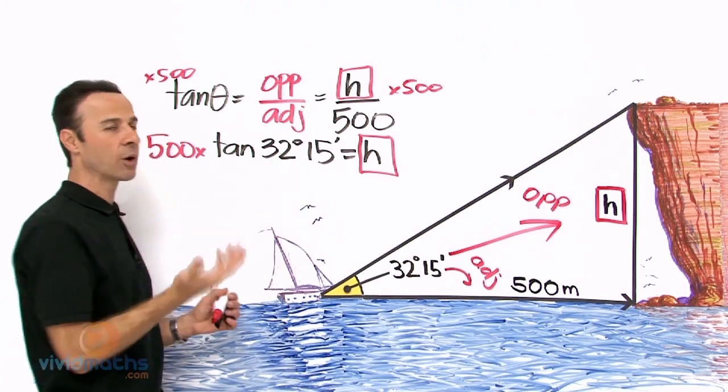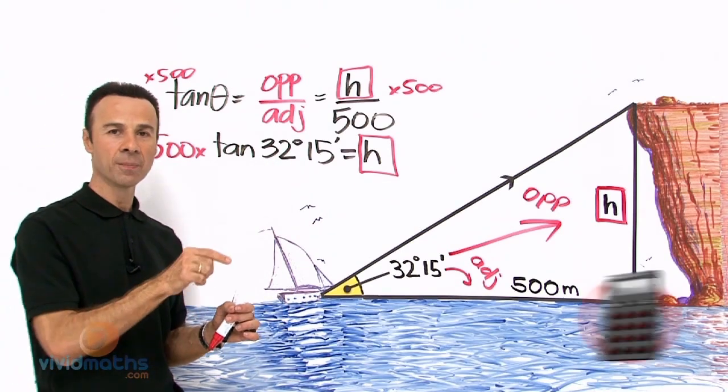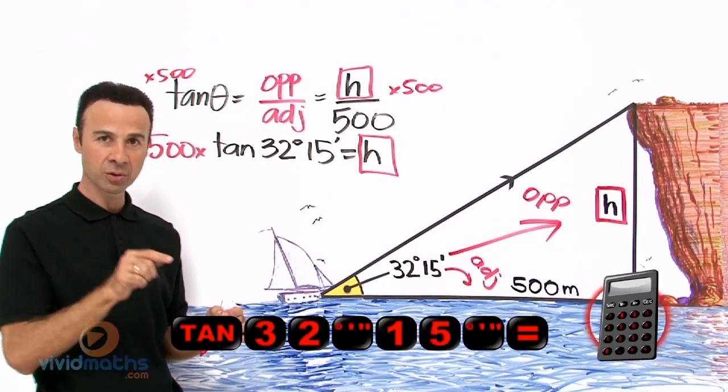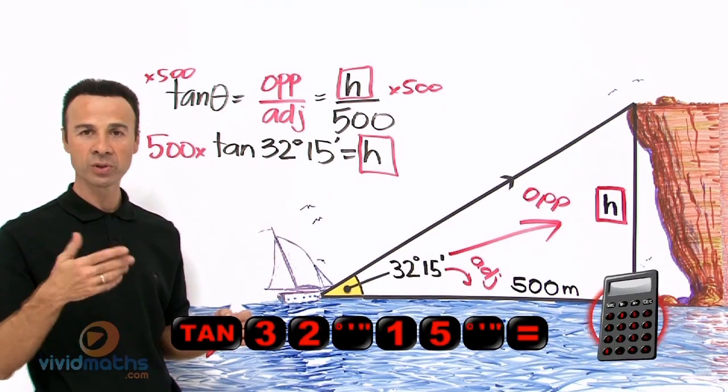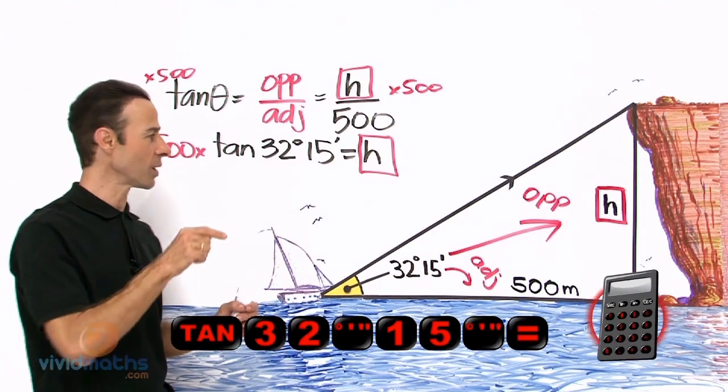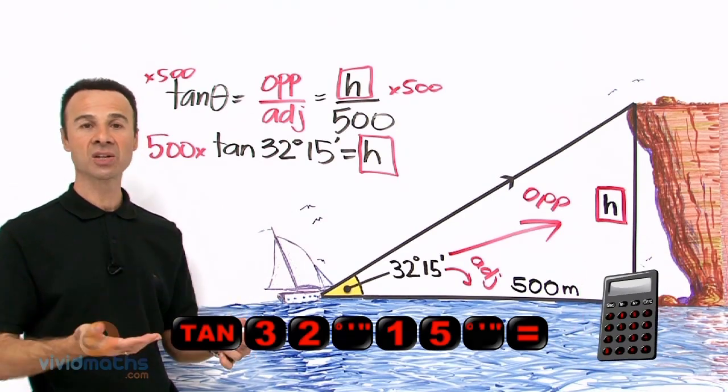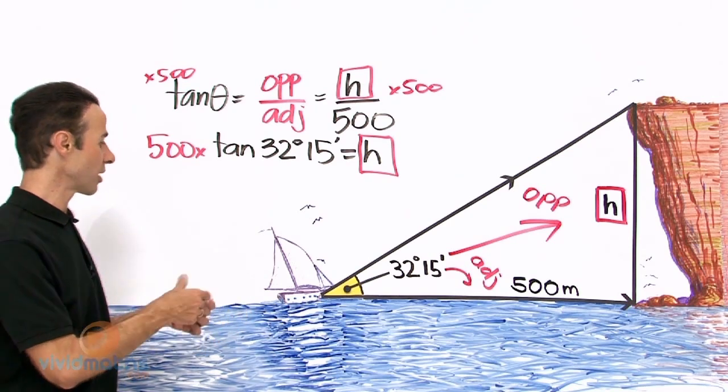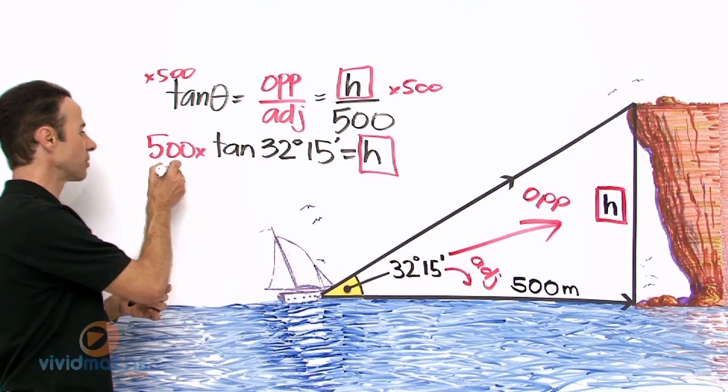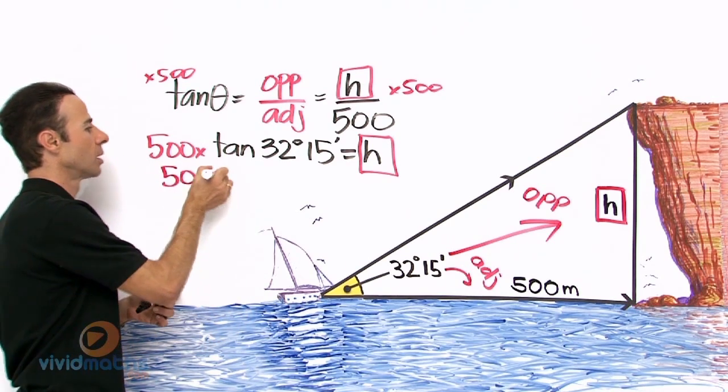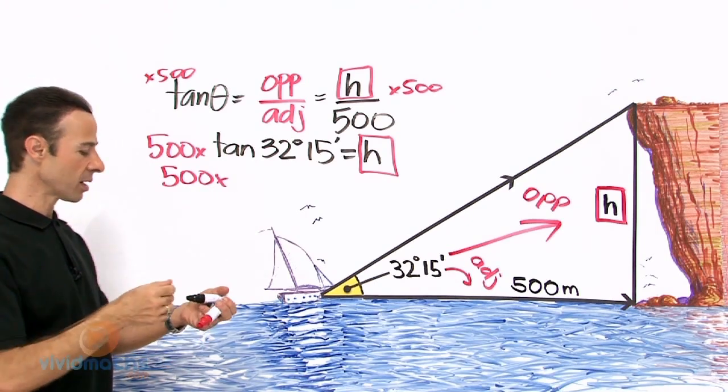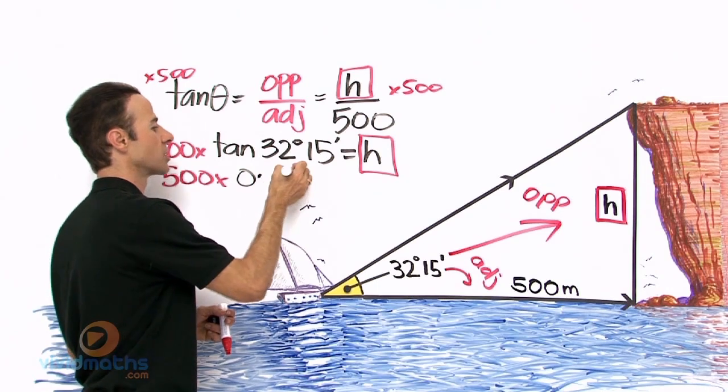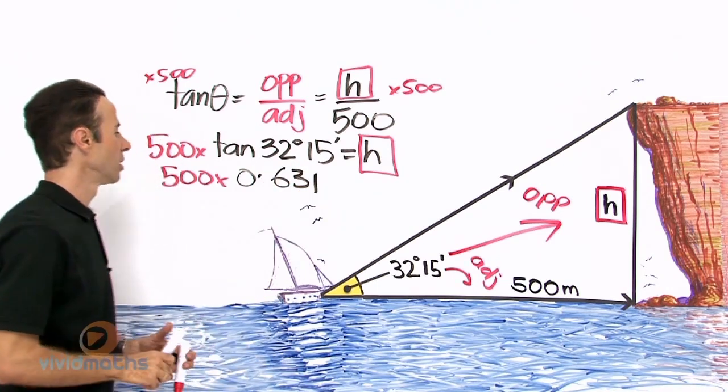Now 32°15', how do we do the tan of that? Well, what we do is we go tan 32 degrees, but when we put the 32 we go 32 DMS, or degrees minutes seconds, and then we press 15 DMS. And that will change it into degrees minutes seconds so the calculator can process it. So then we end up with 500 times tan 32°15', which once you put in the calculator is going to yield 0.631.